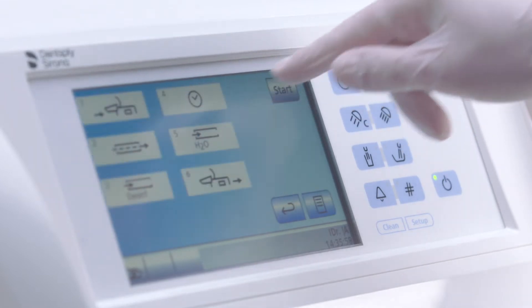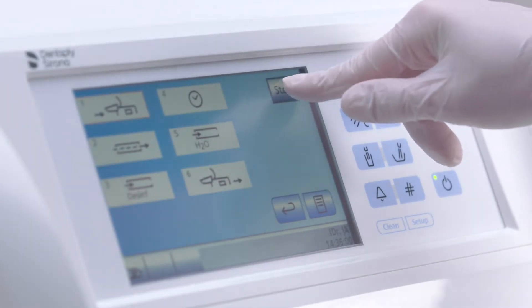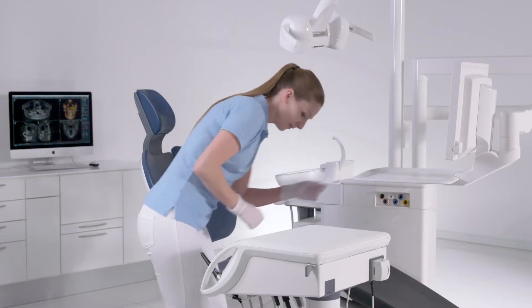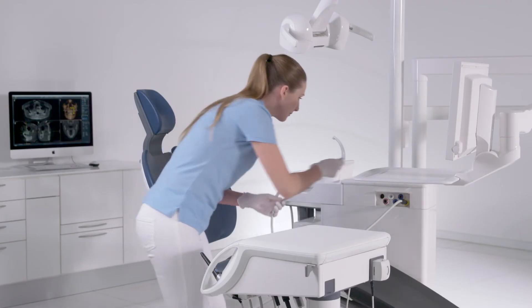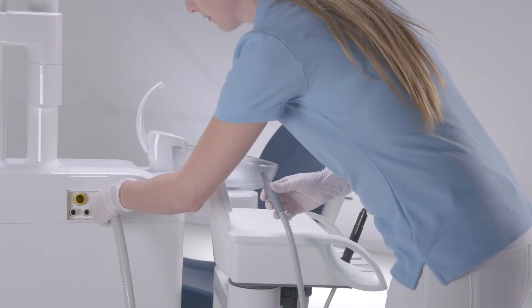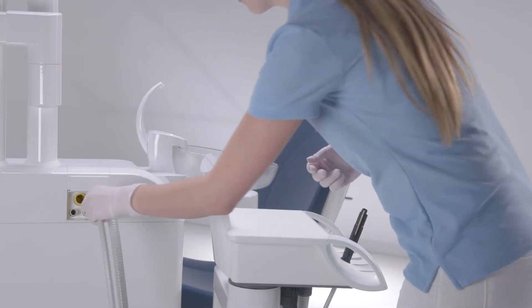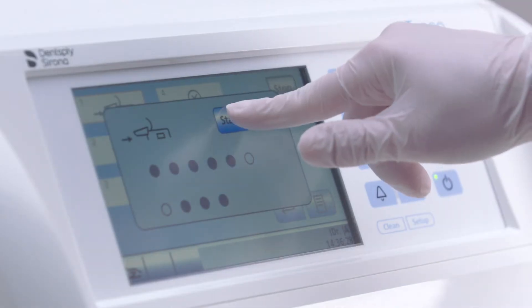Activate the function in the sub-menu of the Start dialog. Attach the instrument hoses of the dentist and assistant elements and the suction hoses to the designated adapters in the water unit, and then press Start.